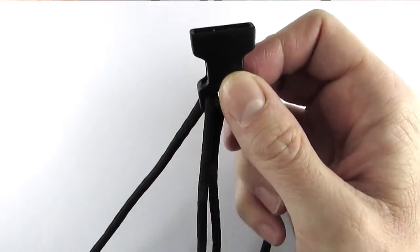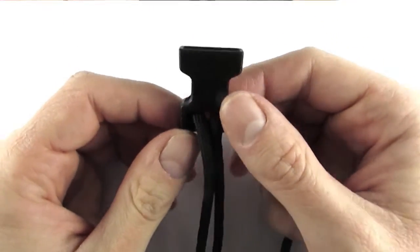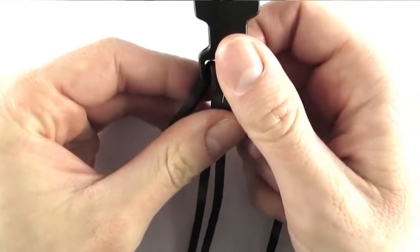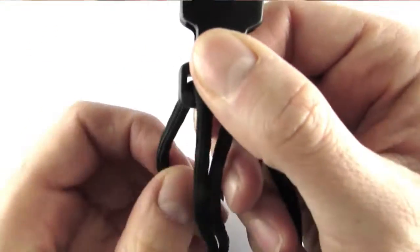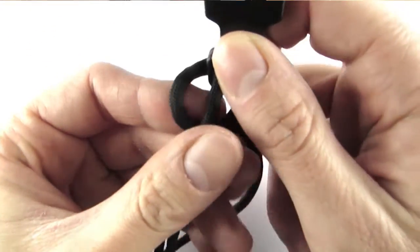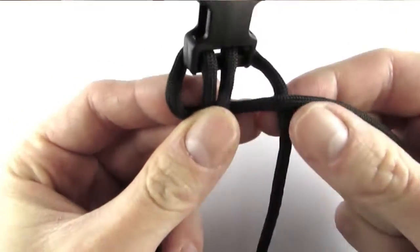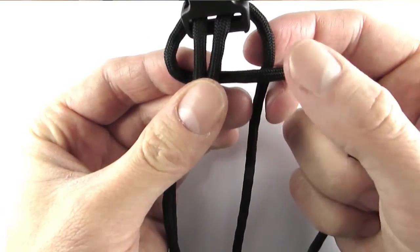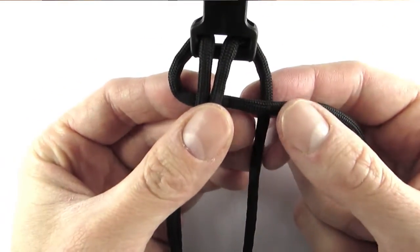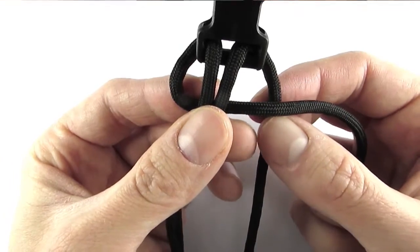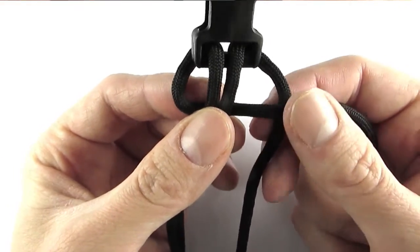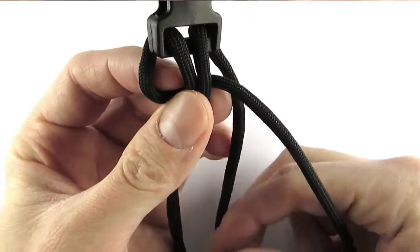At this point we're going to start our tying process. To make this basic style of bracelet, we're going to use the cobra knot, which means we're going to take our left cord, place it under the core, take our right cord, place it under this, and then feed the right cord through.